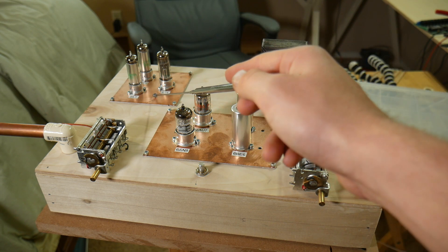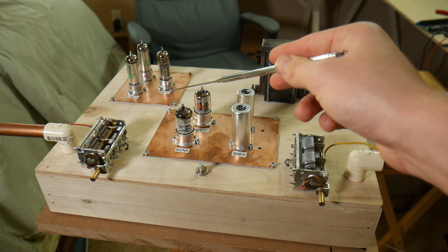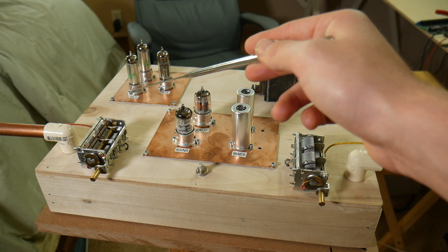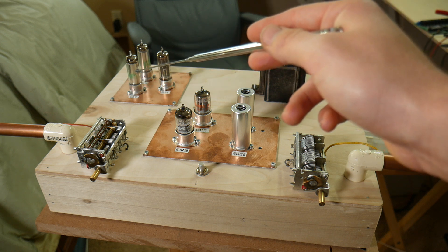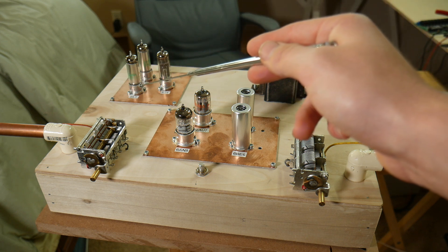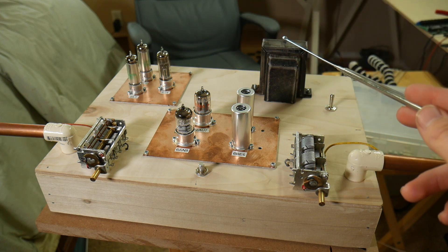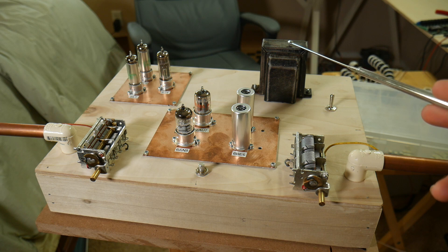Over here is the power supply section. I have the 6X4 rectifier tube and two OA2 gas-filled regulator tubes. They're both in series and both of them provides 150 volts of regulation. Together, that's 300 volts. Over here, we have the power supply transformer. This is Acme brand, kind of funny, and it's actually from 1946.